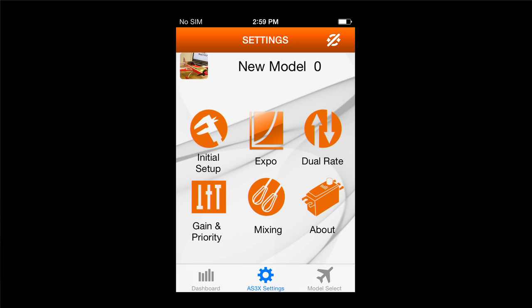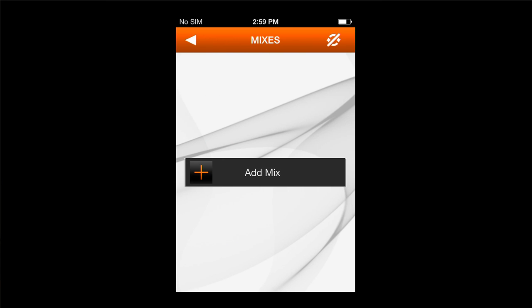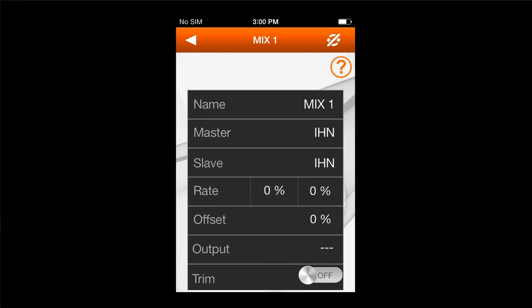So in the settings screen, the AS3X settings screen, bottom middle, there's a mixer icon. Go ahead and activate the mixing function. You'll notice that there's add mix and you'll be able to add multiple mixes. So let's start by adding a mix and that will take you to your mixing functions.